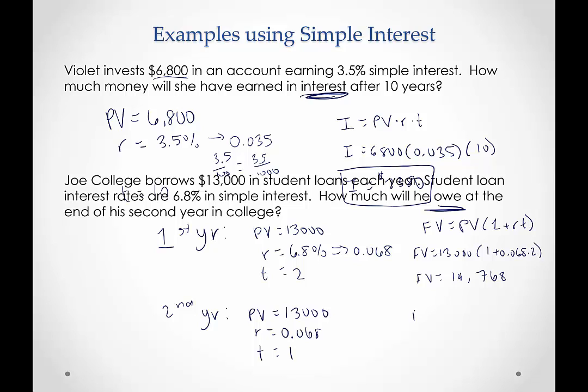Now for year two, we're going to use the same thing. FV = $13,000 × (1 + 0.068 × 1) because it's only one year this time. And when we do that, we end up with a future value of $13,884.